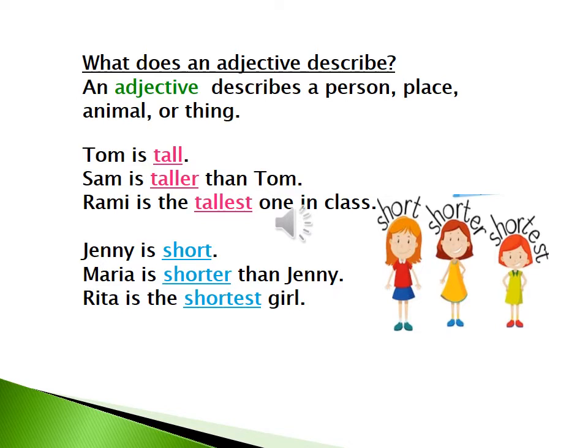Jenny is short. Where is the adjective? Short. Maria is shorter than Jenny. Where is the adjective? Shorter. So, shorter is a comparative adjective. It compares two persons, Maria and Jenny.